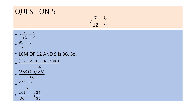Applying the formula: 36 divided by 12 into 91, minus 36 divided by 9 into 8, upon 36. This gives 3 into 91 minus 4 into 8 by 36, which is 273 minus 32 by 36, giving 241 by 36. Changing it into a mixed fraction, we get 6 and 25 by 36.